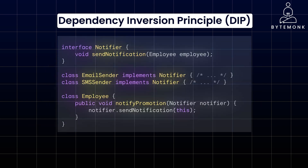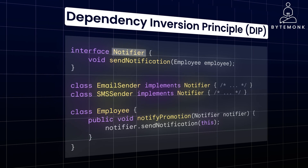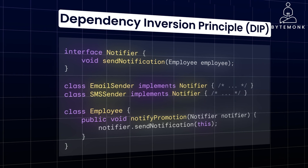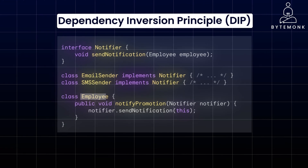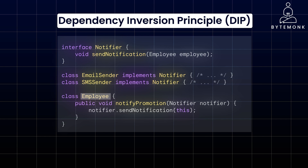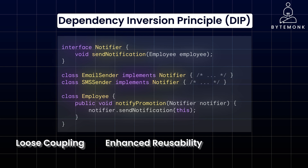In the improved design, we introduce a Notifier interface that defines a contract for sending notifications. Both the EmailSender and SMSSender classes implement this interface. The Employee class now depends on the Notifier interface, not on a specific implementation. This makes it easy to swap out notification mechanisms without changing the Employee class, promotes code reusability, and allows you to test the Employee class by providing a mock Notifier implementation — focusing on the core logic without dealing with external dependencies.